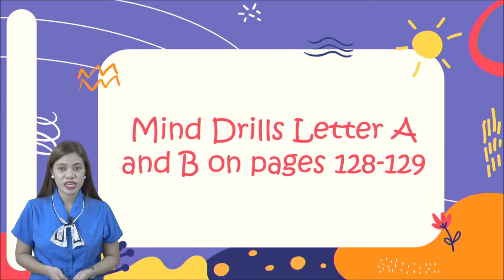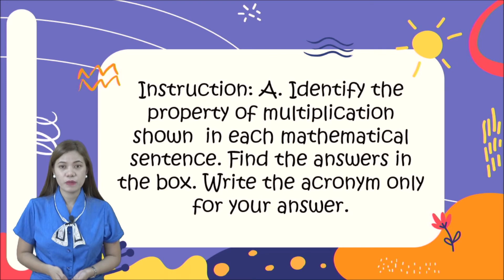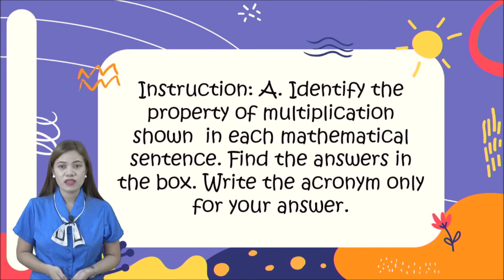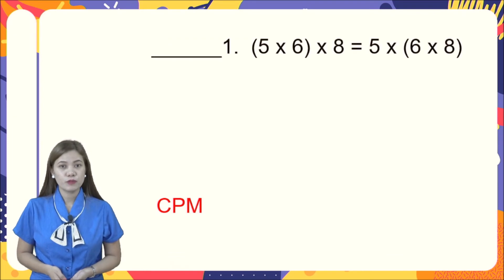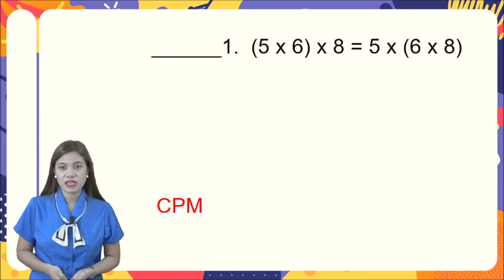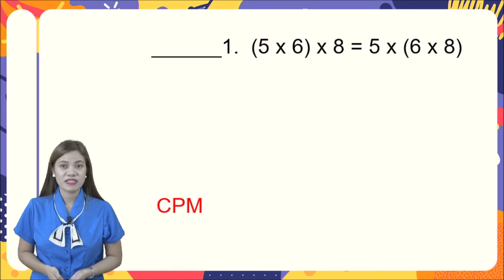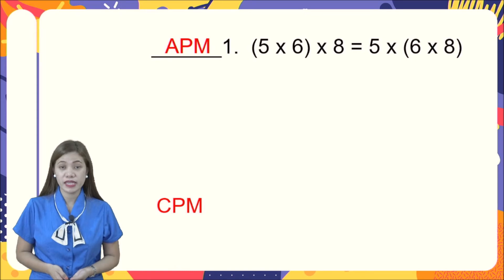Now let's answer your book. Kindly open your book on pages 128 to 129. For letter A, identify the property of multiplication shown in each mathematical sentence and find the answers in the box — write the acronym only. For number one: five times (six times eight) is equal to (five times six) times eight. Good job — it's associative property of multiplication, or APM.